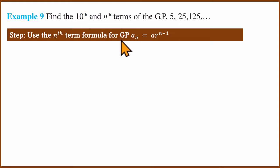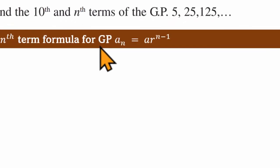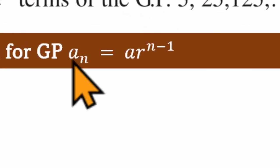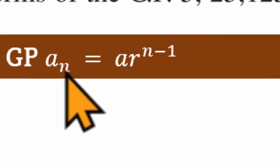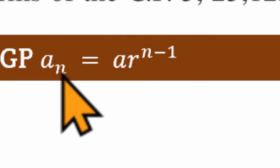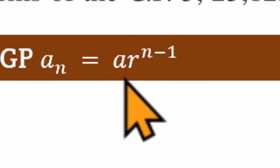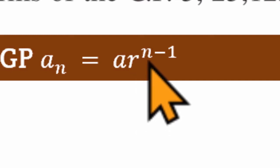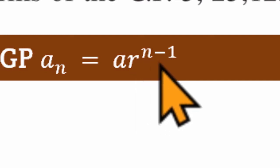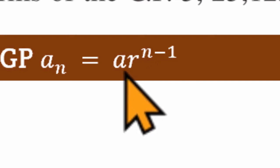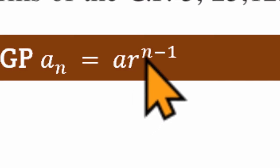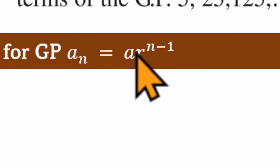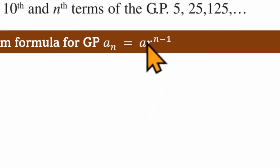We use the nth term formula for GP. The nth term formula of GP is: An, the nth term of the series, is equal to a multiplied by r to the power n minus 1, where a is the first term, r is the common ratio, and n is the term number.